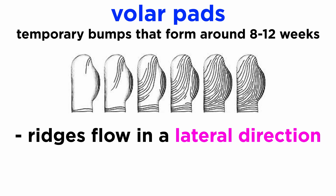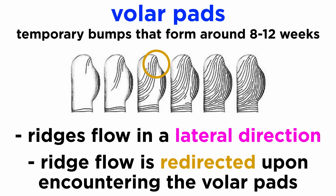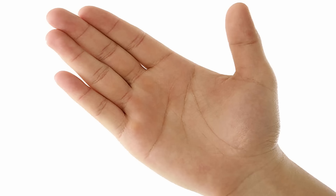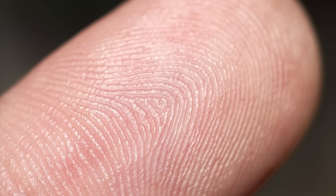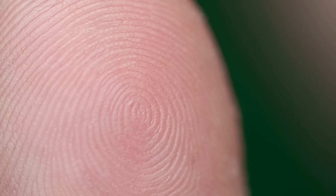Generally, the ridges on the hands and feet flow in a lateral direction. But when the ridge flow encounters the volar pads — which are just bumps on the skin — the ridge flow is redirected in a different direction. This is similar to the flow of water, which redirects itself upon encountering any obstacle or a bump. Notice how the ridges on the fingers and the palm go in a general side-to-side direction, and then the general side-to-side ridge flow pattern is suddenly diverted upon encountering these bumps, giving rise to different intense patterns that look like a spiral or a loop.